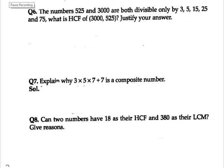Hello everyone, let's start with exercise 1.2 question number 6. It says the numbers 525 and 3000 are both divisible only by 3, 5, 15, 25 and 75, so what is the HCF of 3000 and 525?